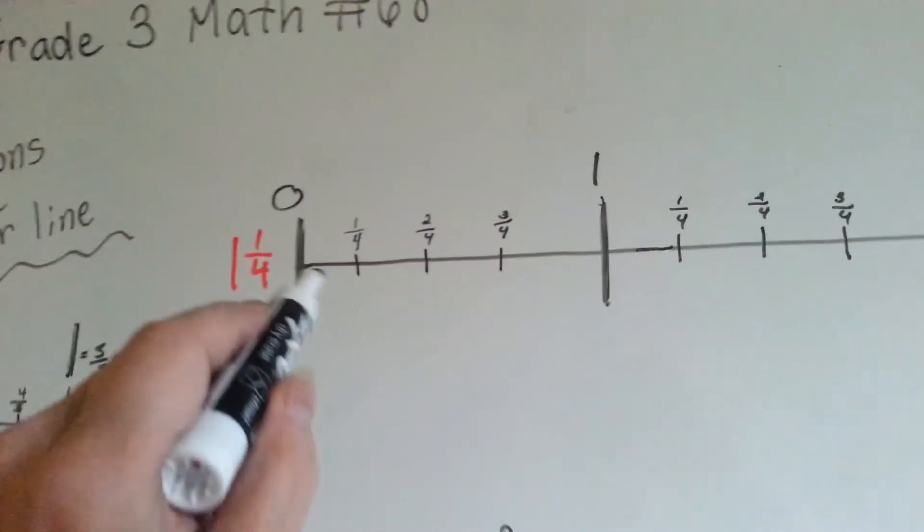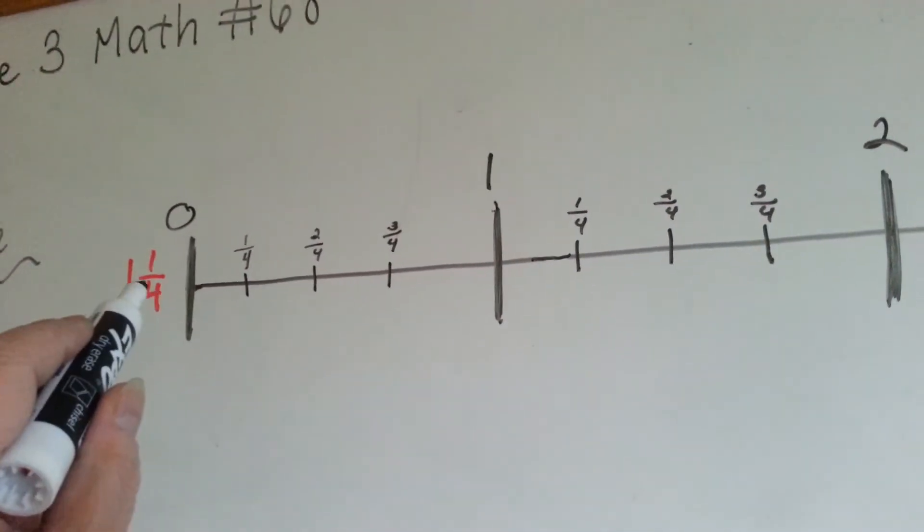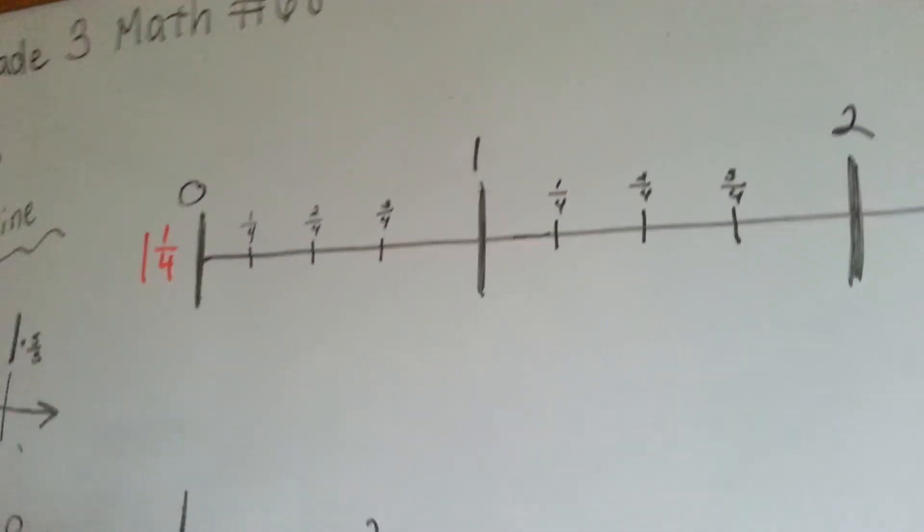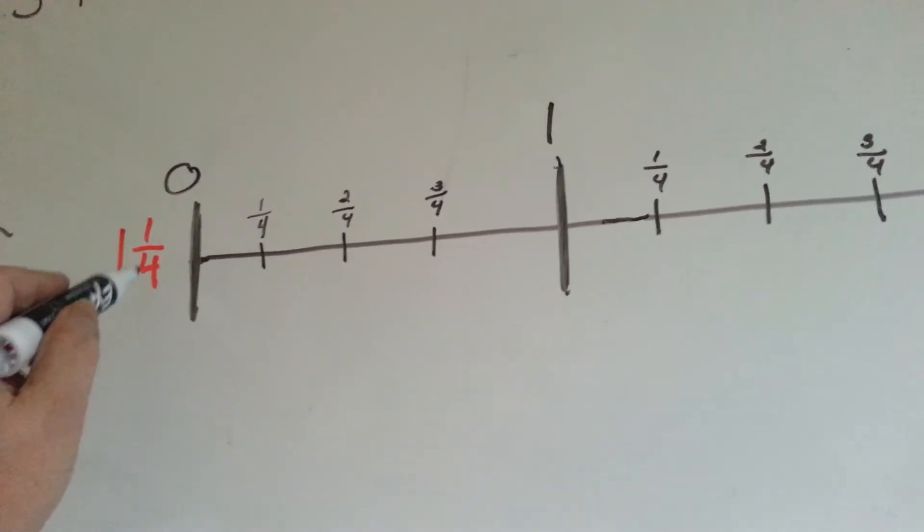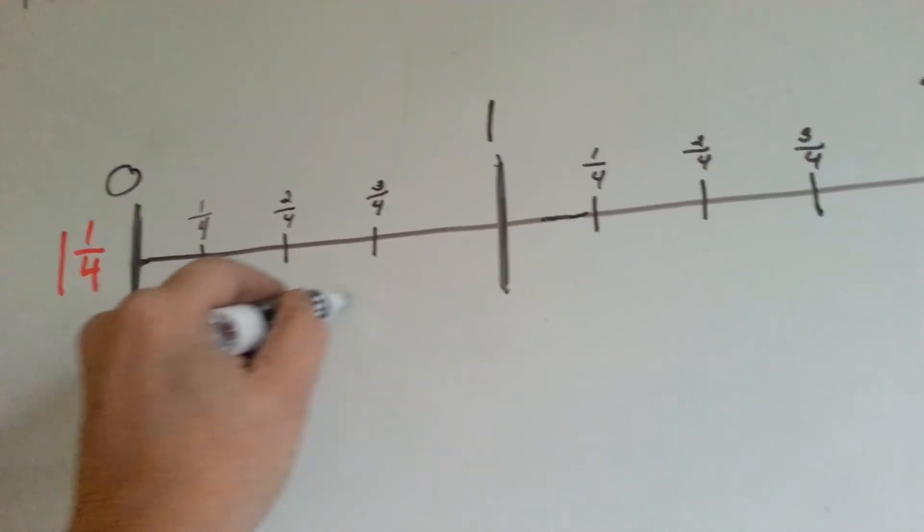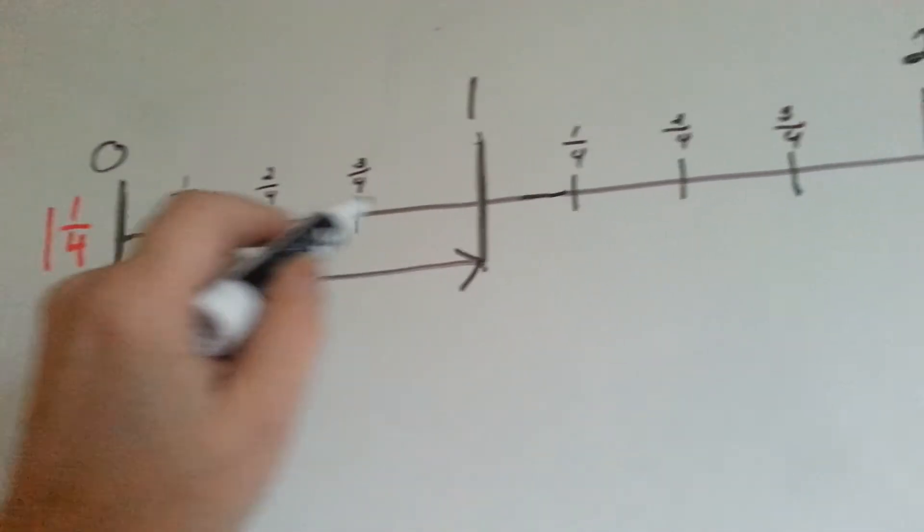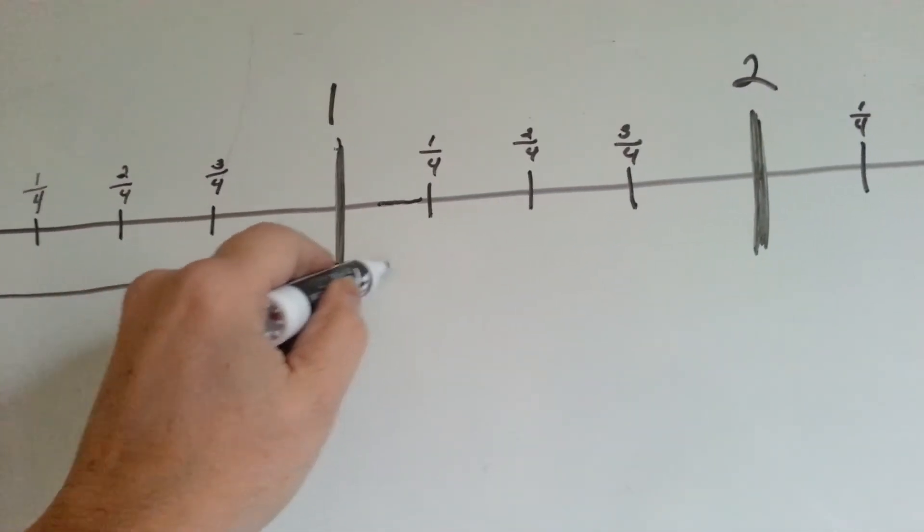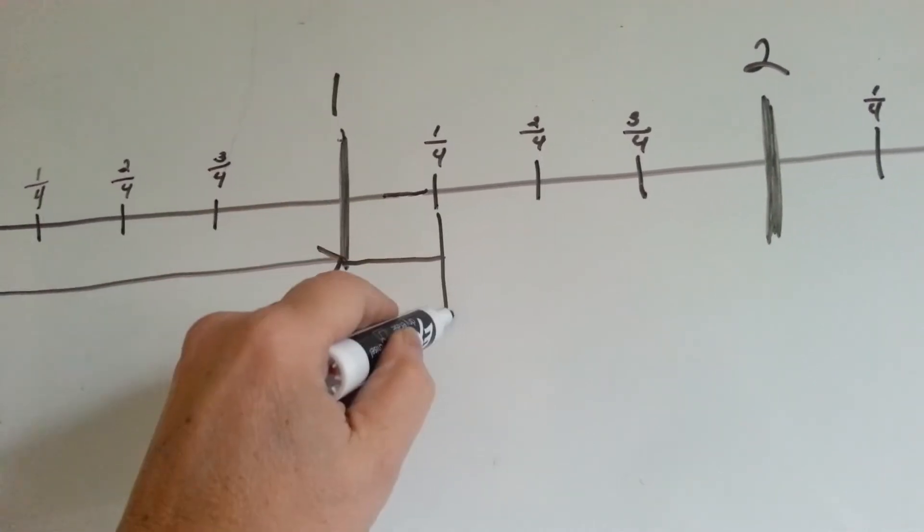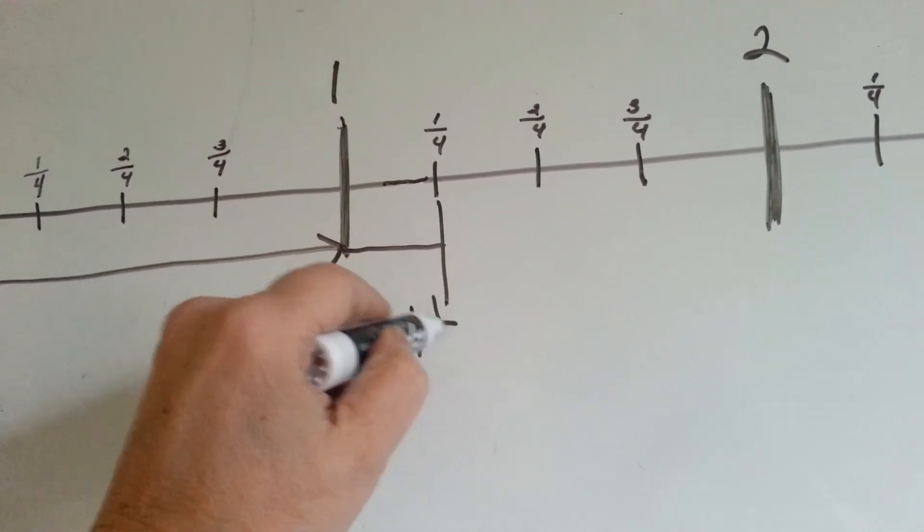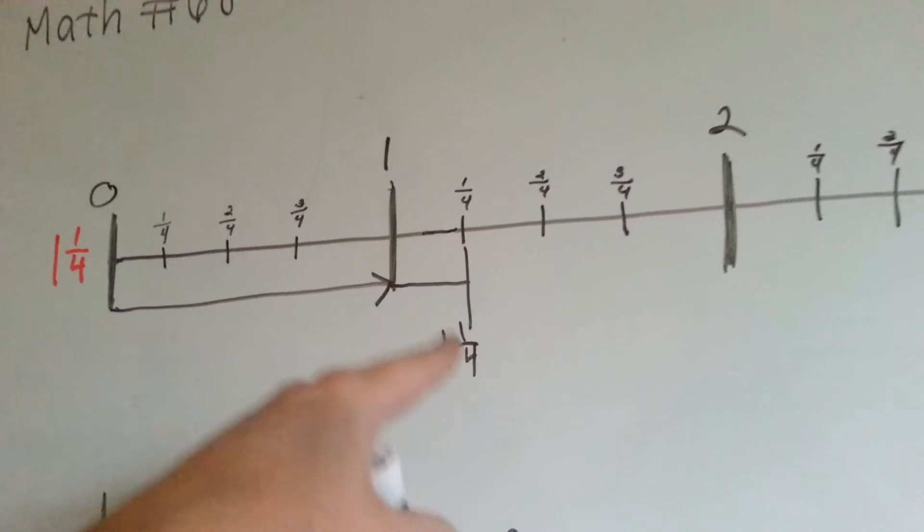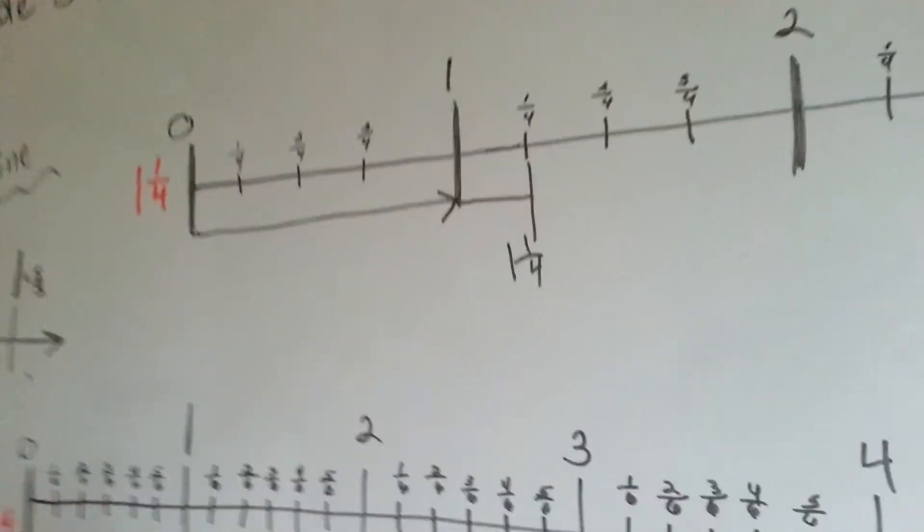So, if I wanted to find one and a fourth, where would I look? Well, we need one whole one, so that means we have to get past the whole one here, so now we're here, and we need one-fourth, and that would put us right here. That would be one and one-fourth. A whole one and a fourth of one.